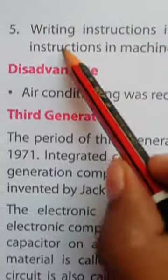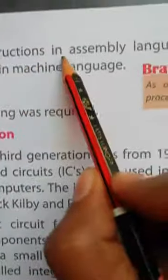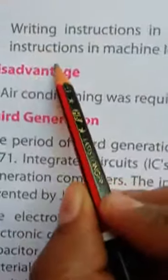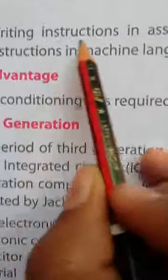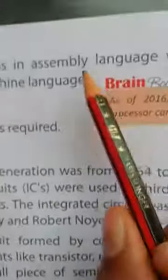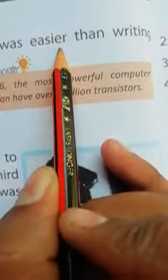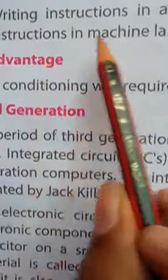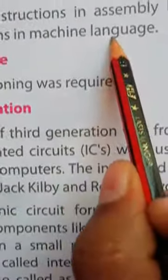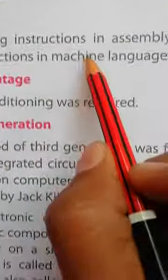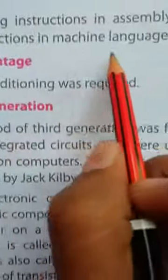Number five. Writing instruction in assembly language was easier than writing instruction in machine language. Writing means लिखना. Instruction means निर्देश. Language means भाषा. Easier means आसानी से. Machine भाषा में निर्देश लिखने की तुलना में, assembly भाषा में निर्देश लिखना आसान था.